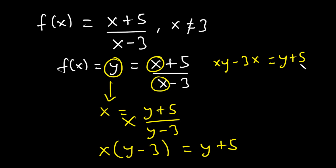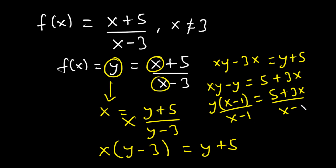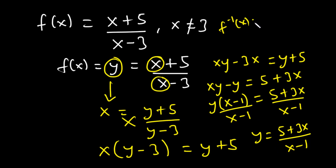Because we want to make y standalone, we transpose y to the left and −3x to the right: xy − y = 5 + 3x. We factor out y: y(x − 1) = 5 + 3x, then divide both sides by (x − 1). So y = (5 + 3x) / (x − 1), which means f⁻¹(x) = (5 + 3x) / (x − 1).